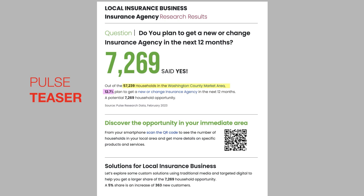In the teaser presentation, which is designed to get the attention of the business, it's focused on projecting the market household opportunity. In this example here, 57,239 households in the total market. That number — 57,239 — times from the Pulse survey, 12.7% said yes, they plan to change to a new insurance agency, is the 7,269.